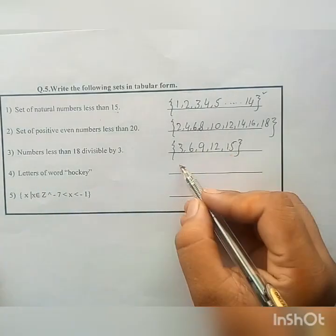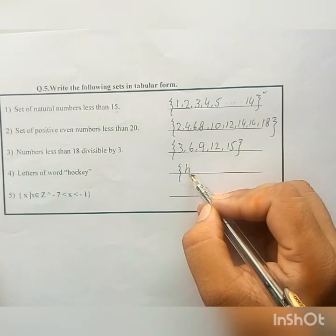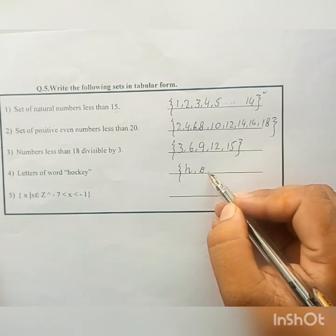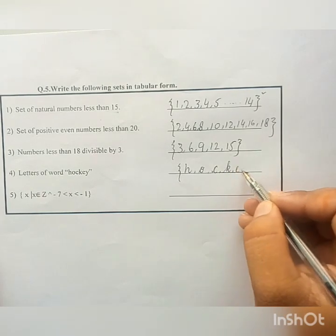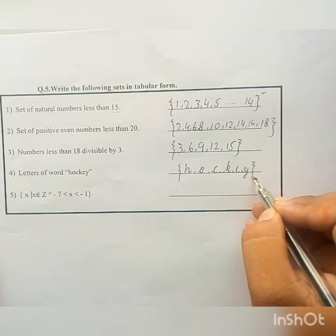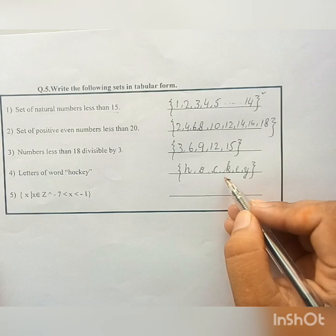Next is letter of word hockey. So letter of word hockey is {H, O, C, K, E, Y}. This is a set of letters of word hockey.